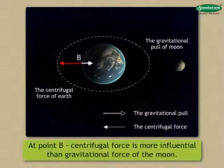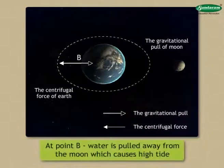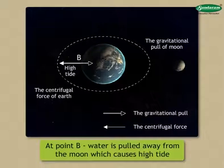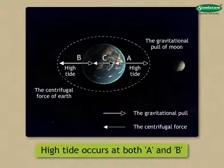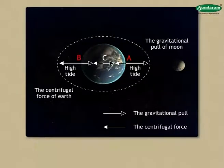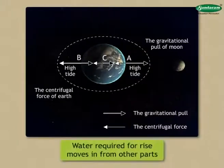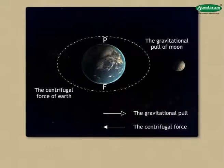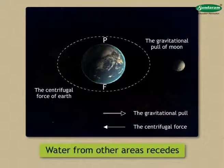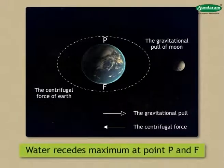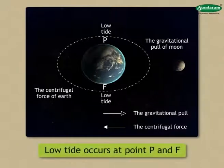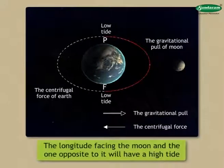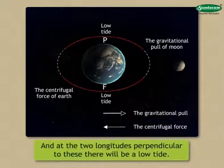At point B, the centrifugal force is more influential than the gravitational force of the moon. Therefore, at B the water is pulled in the direction away from the moon and this too gives rise to high tide. Thus, high tide occurs at both A and B. The water level rises and the water required for this rise moves in from other parts. Therefore, the water in those other areas recedes — maximum at points P and F — and so low tide occurs at these points. This means the longitude facing the moon and the one opposite to it will have a high tide, and at the two longitudes perpendicular to these there will be a low tide.